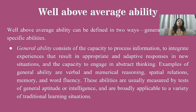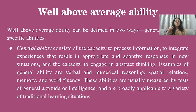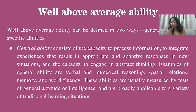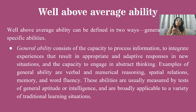अब तीनों को जान लीजिए। Well above average ability को दो तरीके से समझ सकते हैं - general ability or specific ability। General ability consists of the capacity to process information, to integrate experiences that result in appropriate and adaptive responses in new situations, and the capacity to engage in abstract thinking। जैसे verbal and numerical reasoning, spatial relations, memory, word fluency - these abilities are usually measured by tests of general aptitude or intelligence।